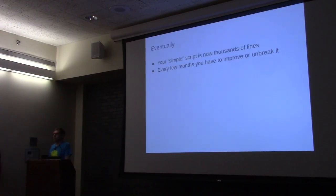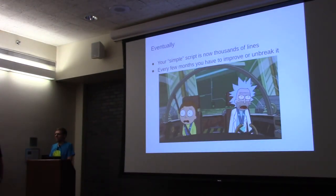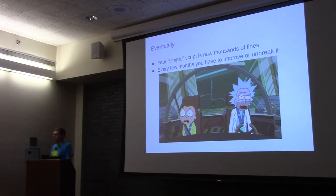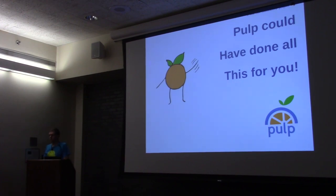Speaking from experience, I've seen at one organization using CentOS and RHEL, there were two teams — one implemented an rsync-based solution, and one implemented a reposync-based solution — and every few months they had to adapt it. Eventually you're burning yourself out because your reposync-based solution is taking a large portion of your time and breaking your schedules. PULP is a piece of software designed to solve exactly this problem. It is a repository management and content management solution for multiple types of content, RPM included. I'll hand it over to David now.